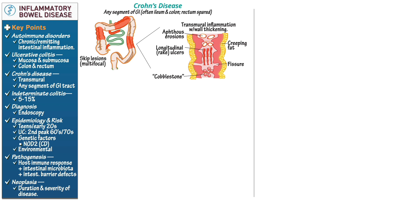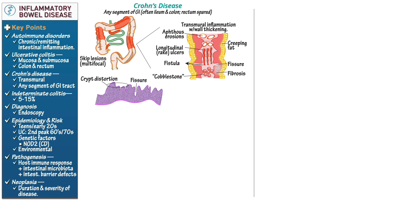Show that fissures in the wall form and can progress to form fistulas that open to the abdominal pelvic cavity or connect with other organs, such as the vagina. As a result of chronic inflammation, fibrosis of the GI wall also occurs. Show that histologically, Crohn's disease is associated with intestinal wall crypt distortion, fissures, and, in up to 60% of cases, non-caseating granuloma formation.